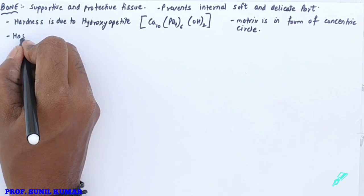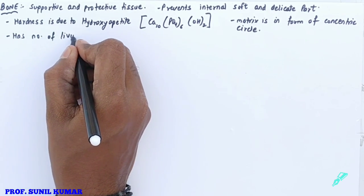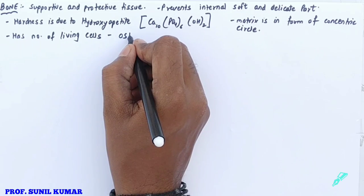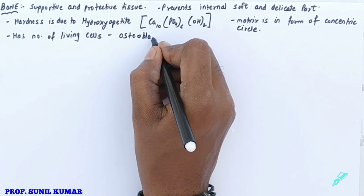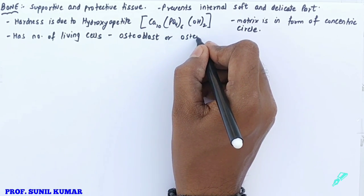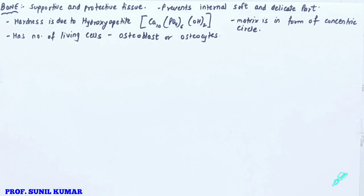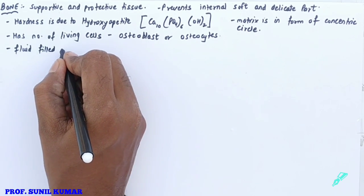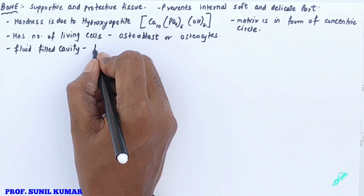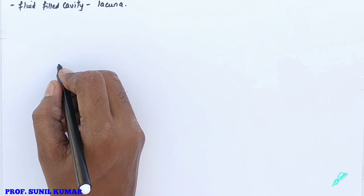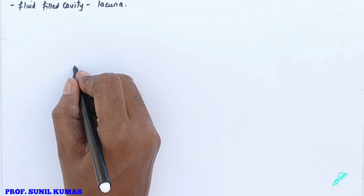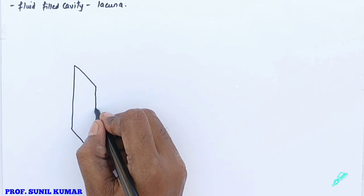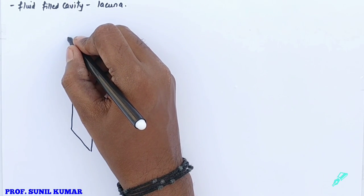The concentric rings are called the Haversian canal. The bone has a number of living cells called osteocytes. The study of bone is called osteology, and cancer of the bone is called osteoma. The bone is filled with a cavity called the lacuna.